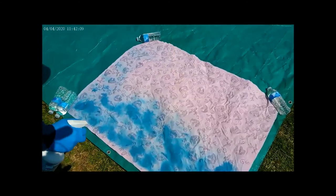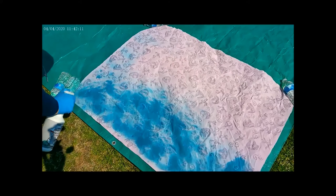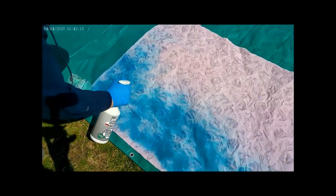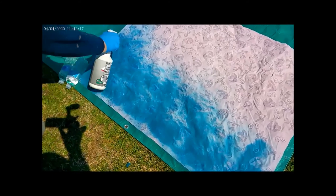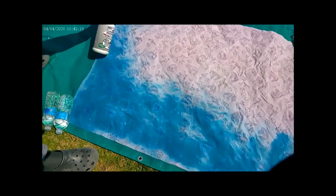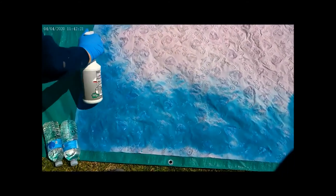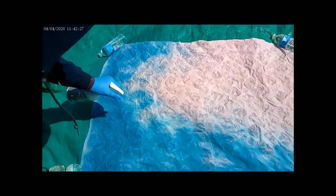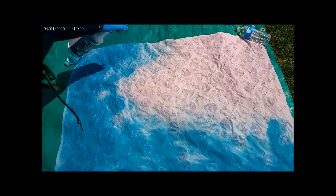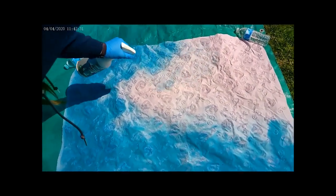My procyon dye mixture is one teaspoon of procyon dye to one and a half cups of soda ash water. My soda ash water - I use a half a gallon of warm water and dissolve two tablespoons of salt and one tablespoon of soda ash.